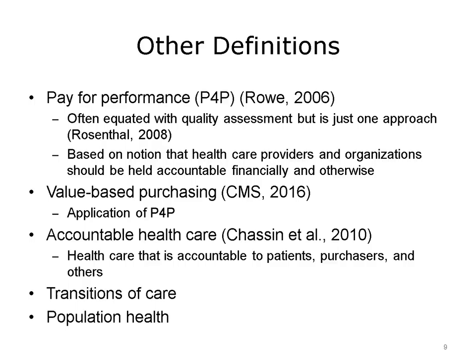Another term is value-based purchasing, which is an application of pay for performance — consumer decisions to purchase health care are based on quality, and consumers may decide not to purchase from a hospital or physician group. Employers have adopted value-based purchasing relatively slowly, even though they apply value-based purchasing in everything else, such as car manufacturers evaluating the value of steel and the food industry examining quality of food. Yet with the health care employers provide to their employees, there's very little in the way of seeking value. Another term gaining favor is accountable health care, meaning providers and organizations must be accountable to patients, purchasers of health care, and others.